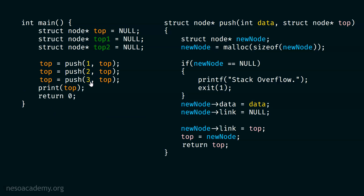It is not difficult. Later on, we can call the print function to print all the elements of the stack. Obviously, we will get 3, 2, 1 as the result — 3 must be the topmost element, 2 the second topmost, and 1 the last element of the stack. So after calling the print function, we must get 3, 2, 1.